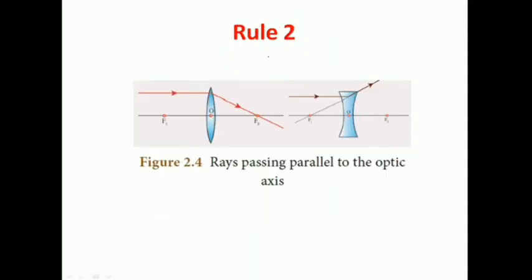Then we move to the second rule. If the incident ray is passing parallel to the principal axis — this line is known as the principal axis, not the optical axis — when the incident ray is passing parallel to the principal axis, it will undergo refraction. And after refraction, the refracted ray will pass through the principal focus on the other side of the lens. This is the second rule.